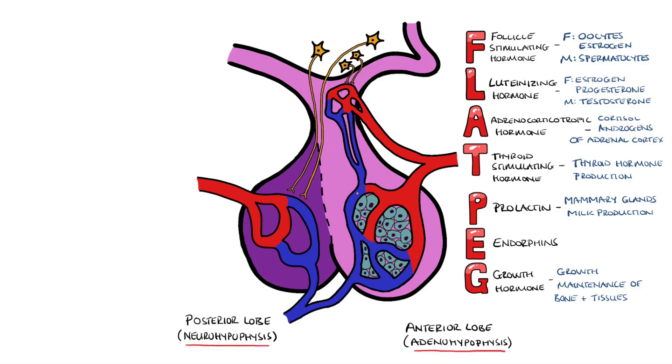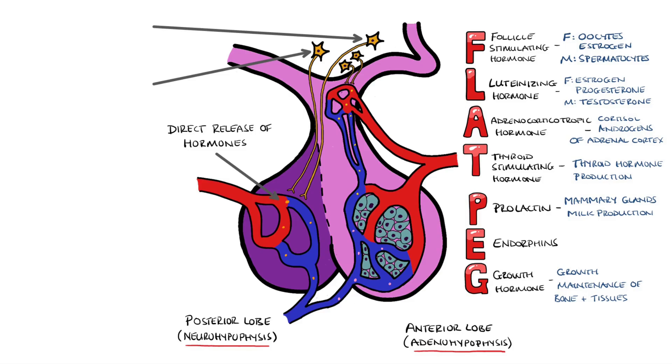The posterior pituitary instead receives secretion of hormones directly into its blood supply from neurosecretory cells originating in the hypothalamus. Specifically, nerve cell bodies forming the supraoptic nucleus and paraventricular nucleus.